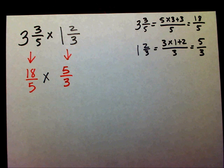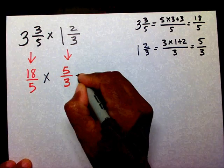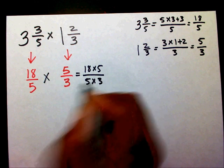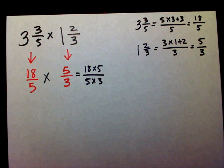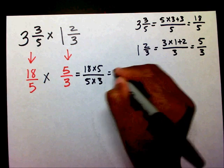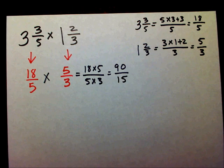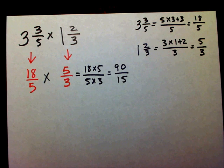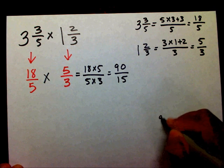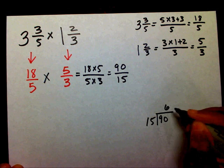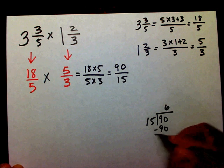Now I'm going to multiply across. I need to find what eighteen times five and five times three are. Eighteen times five gives you ninety, and five times three is fifteen. Again, I have an improper fraction, so I need to divide ninety divided by fifteen. Fifteen will go into ninety six times. Six times fifteen is ninety, leaving me with a remainder of zero.